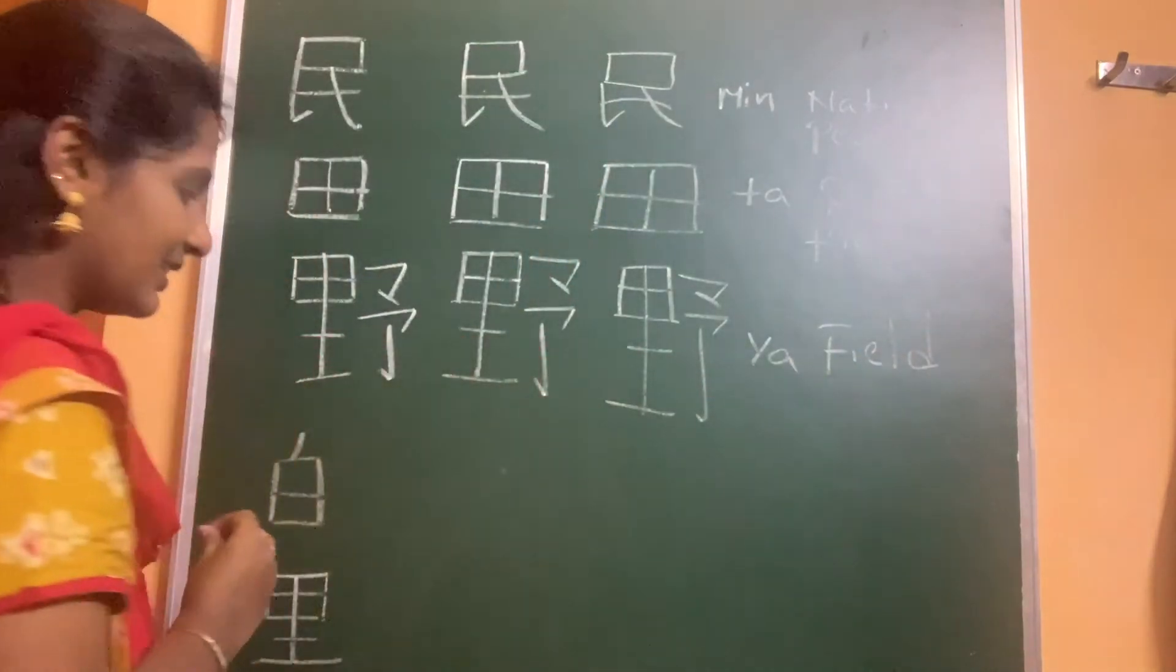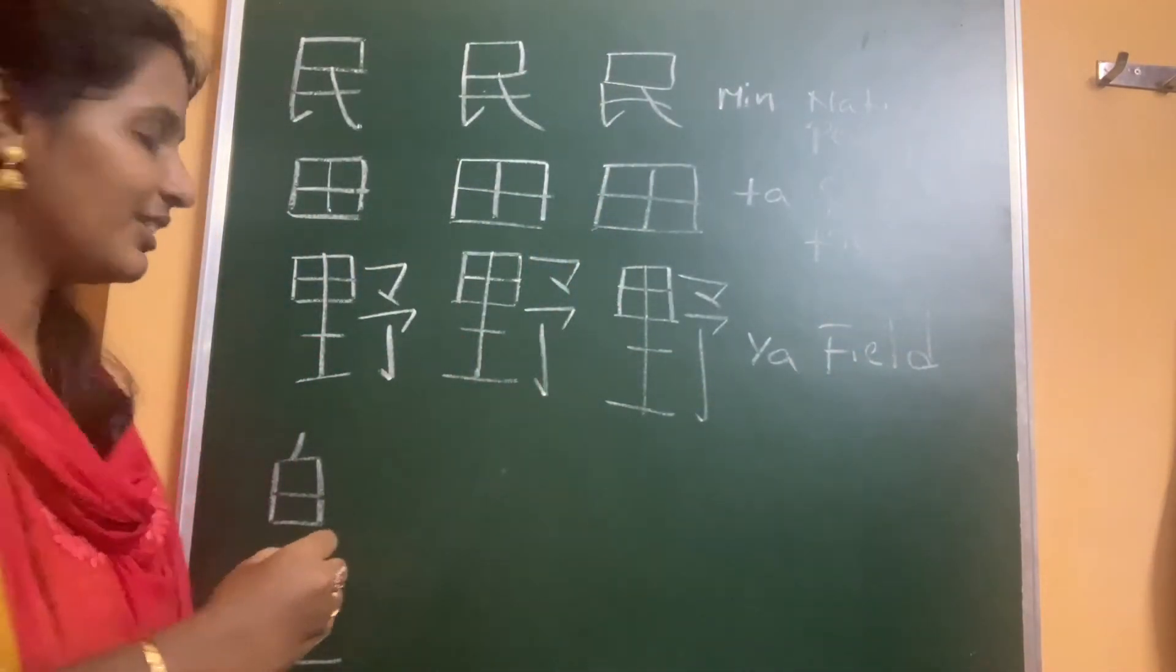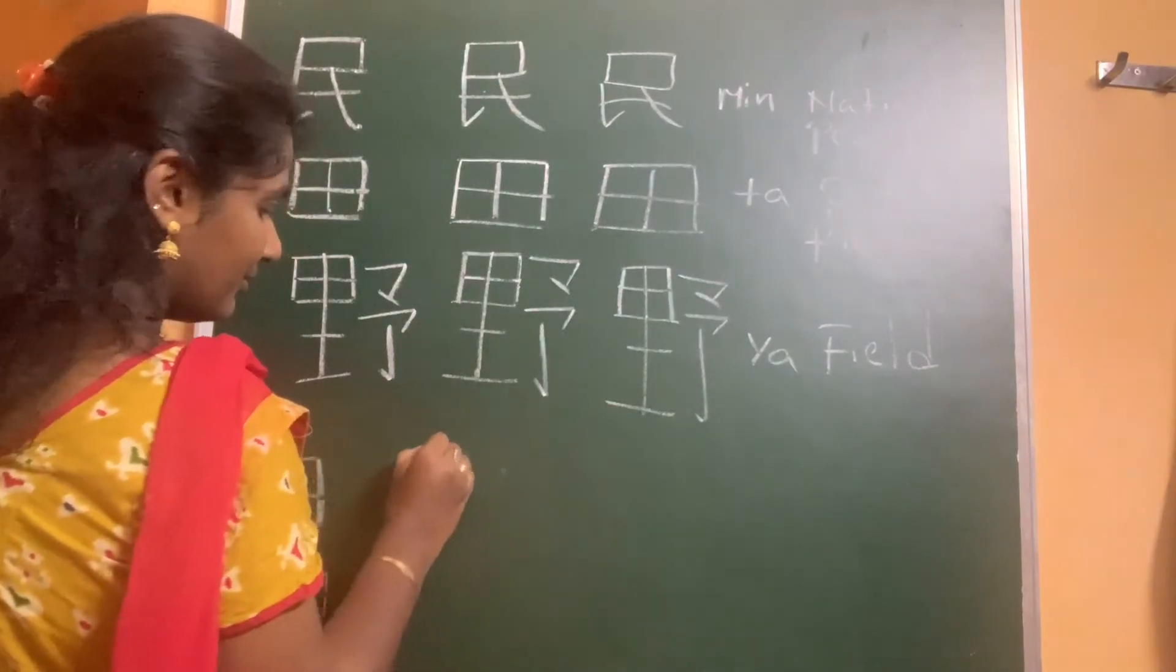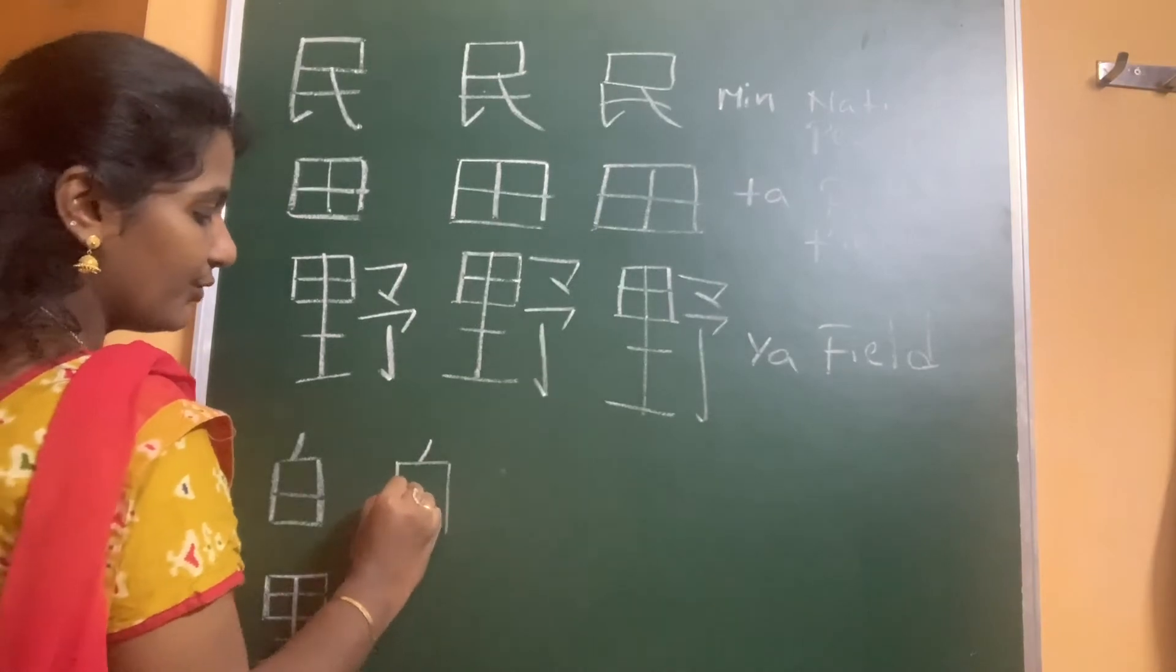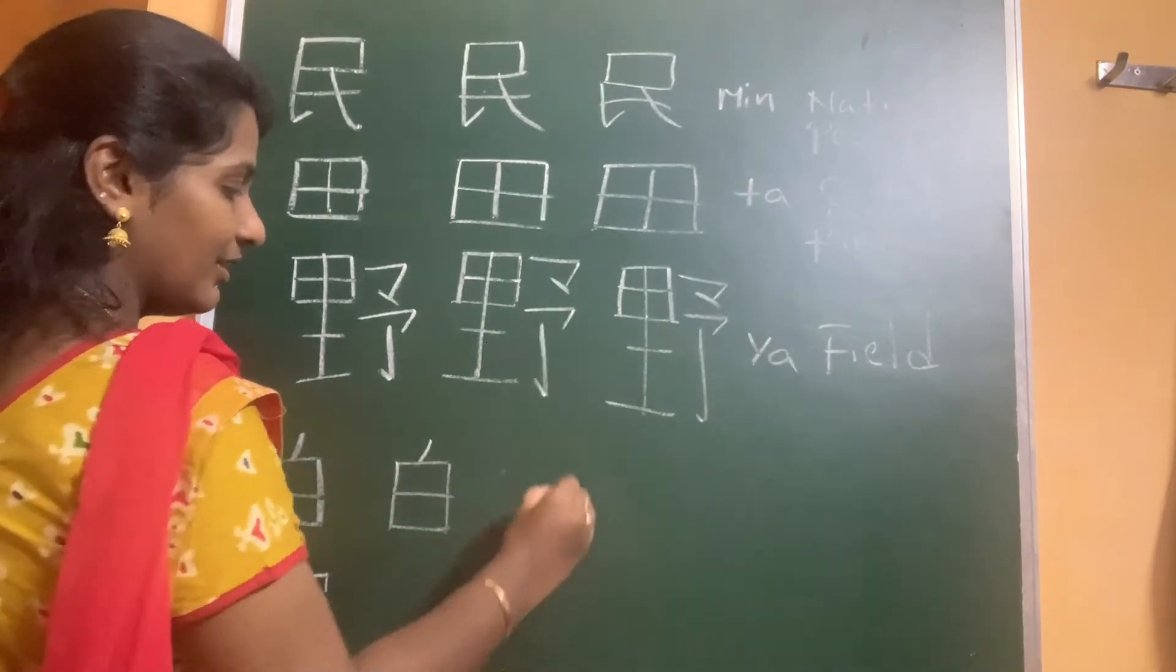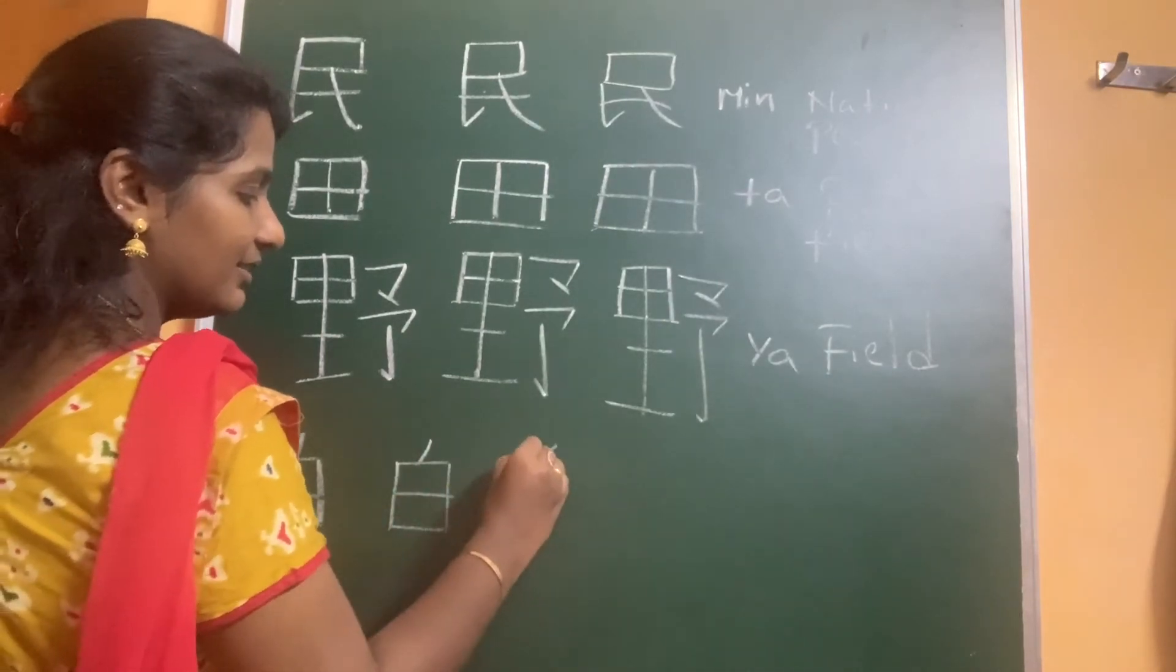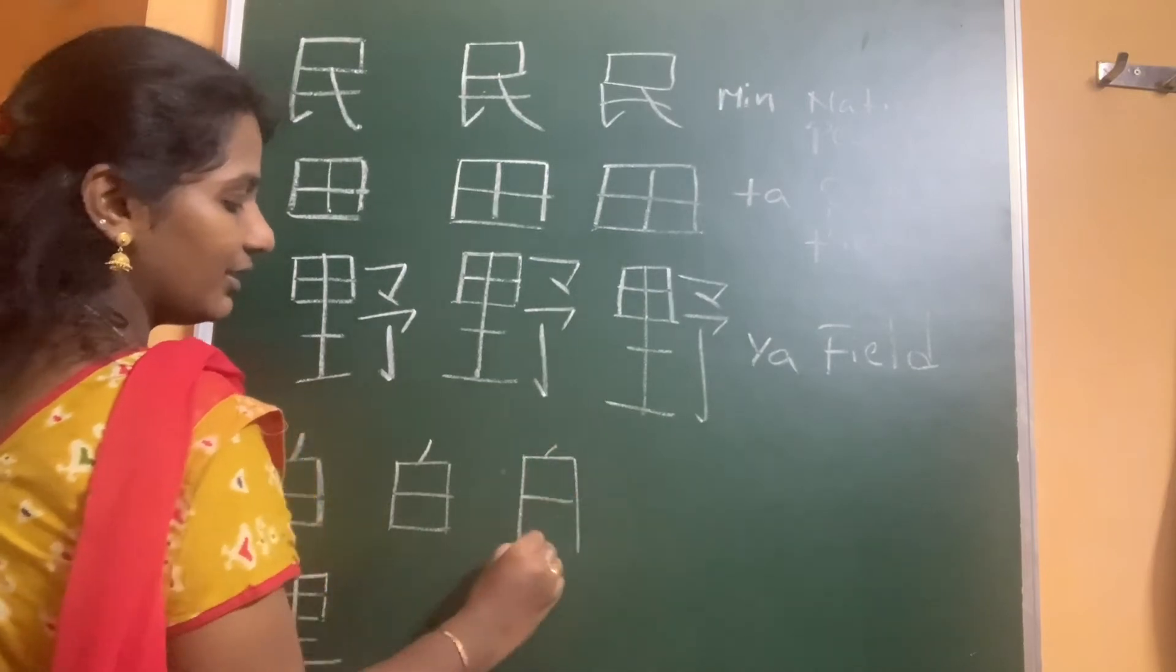Next, this is the kanji for color, white color, shiro. First stroke, second, third, four and five. First stroke, second, third, four and five.